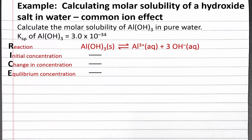Since we're dissolving aluminum hydroxide in pure water, we don't have any aluminum ions to begin with. However, pure water does have a hydroxide ion concentration of 10 to the negative 7th molar at 25 degrees Celsius. Since we don't have any aluminum ions, our reaction quotient Q will be zero, and we'll shift to the right to reach equilibrium. Our change in concentration will be plus x for aluminum and plus 3x for hydroxide, where x is the moles of solid aluminum hydroxide that dissolve in one liter of solution — making x our molar solubility.